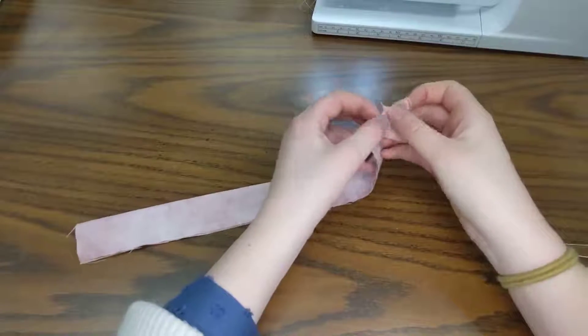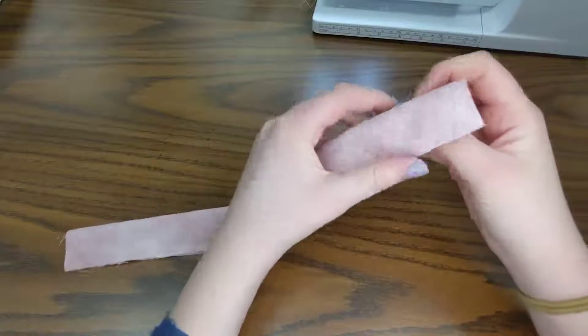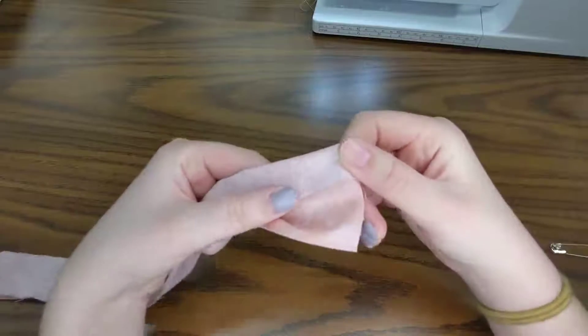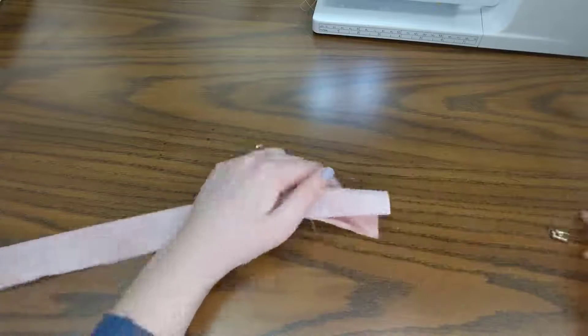I've sewn the first seam of my scrunchie - it starts a little bit jiggly there. You can see my right side is on the inside, my wrong side's on the outside. They look a little different. It's hard to see in the video, but this one's a little bit paler and fainter than the right side.